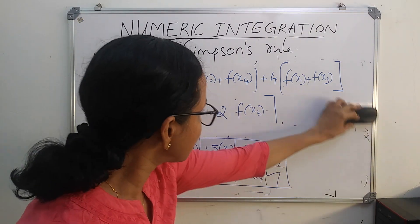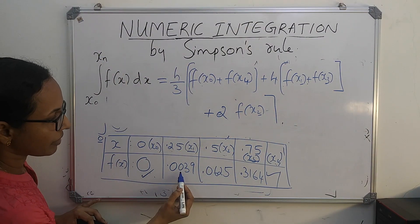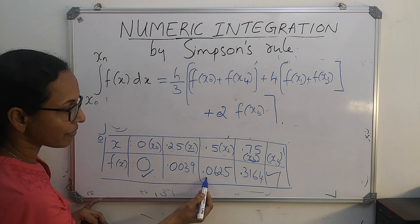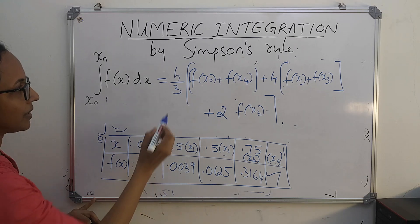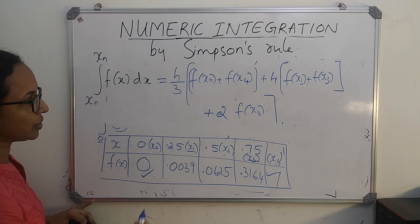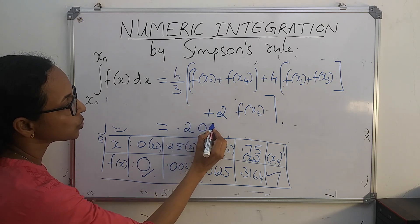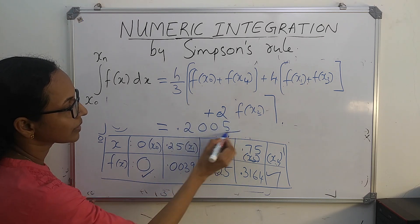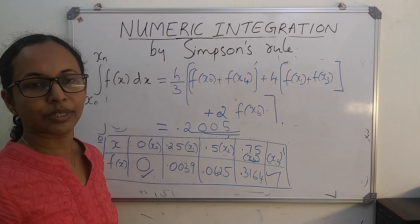Substitute f of x0, f of x4, f of x1, f of x3, and f of x2. The value for h is 0.25. Then computing, you can prove that its value is 0.2005. This is the value of this integral by using Simpson's rule.